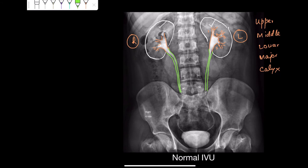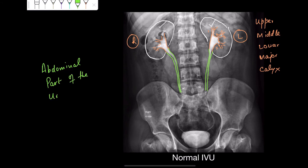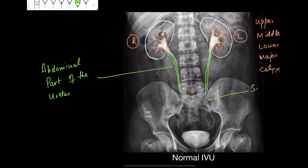If I focus down, I can see very clearly the major part of the abdominal part of the ureter, both on the right and left sides. You can see that this ureter has reached this joint, and I'm sure you remember we call this the sacroiliac joint — and there it is, where you can see the sacroiliac joint.